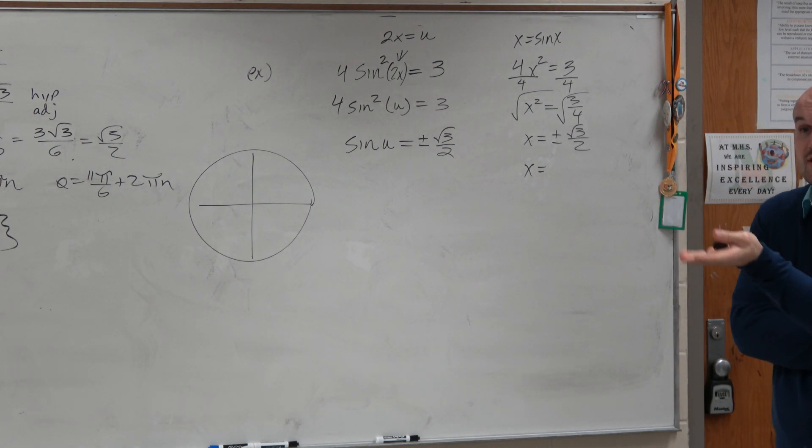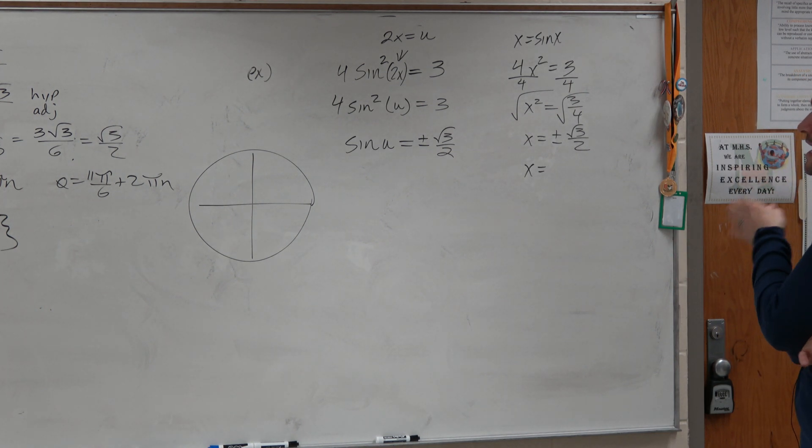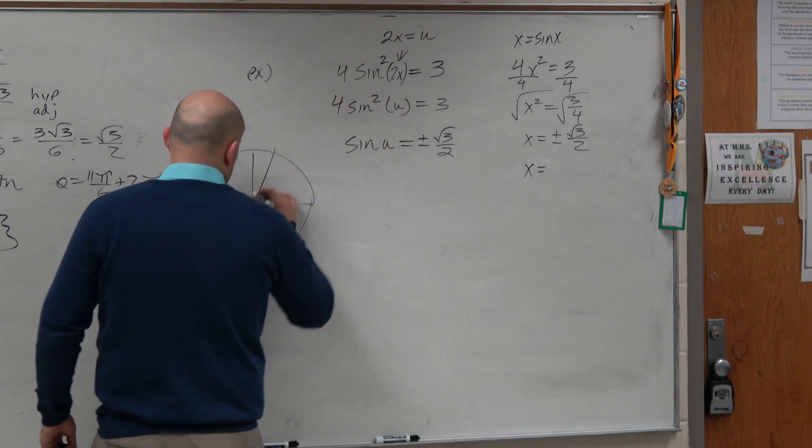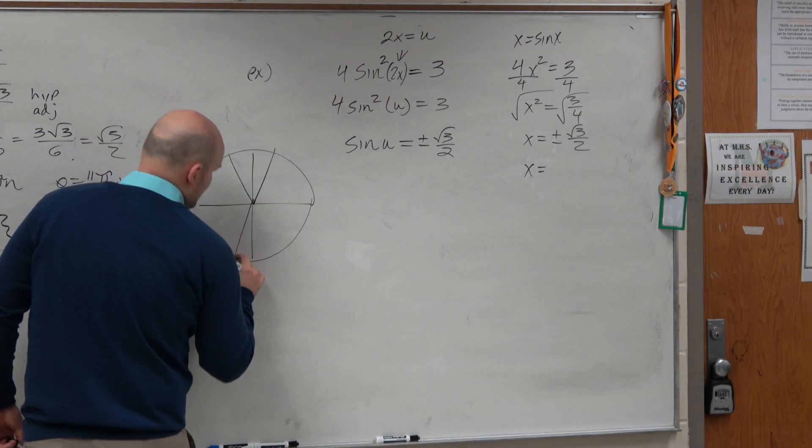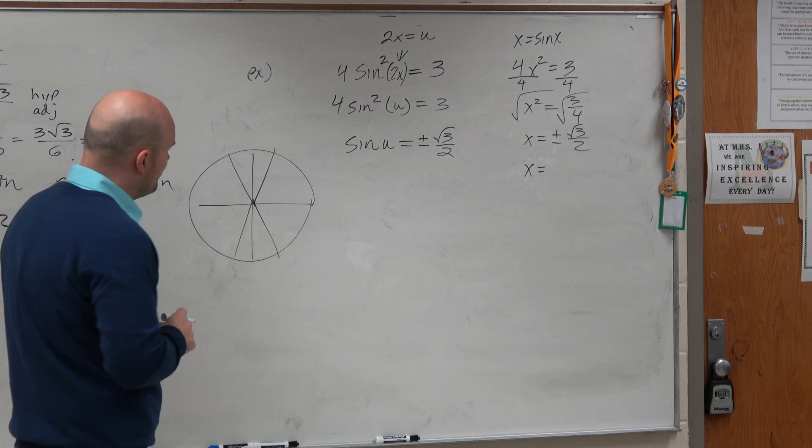So yeah, you're going to mix them up all the time, right? I just did it. So yeah, sine is π over 3. And then it's going to be all of them, though. π over 3, 2π over 3, 4π over 3, and 5π over 3.